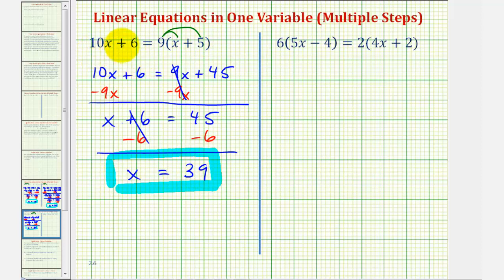On the left side we have 10x + 6, which would become 10 times 39 plus 6. On the right we'd have 9 times the quantity x + 5, or 39 + 5. So 10 times 39 is 390. On the right side we'd have 9 times 39 plus 5, which would be 44. The left side equals 396, and 9 times 44 is also equal to 396, which verifies our solution.